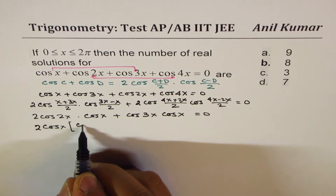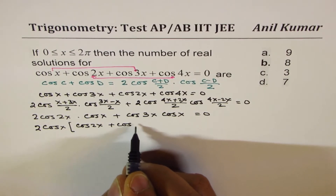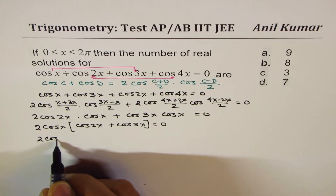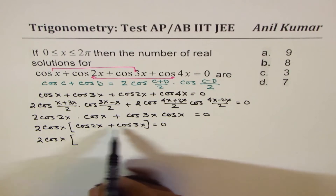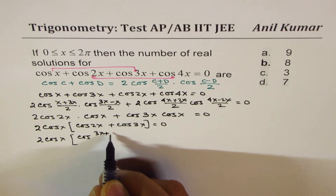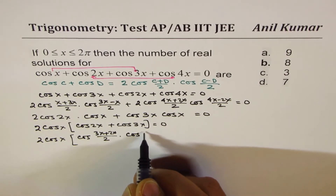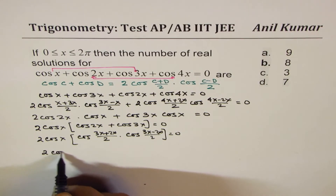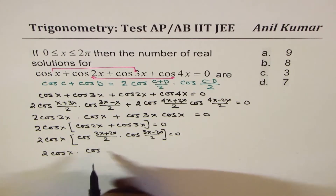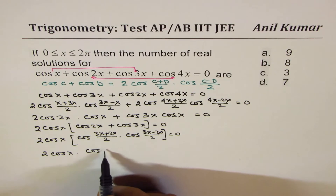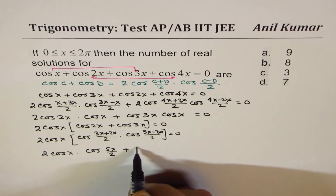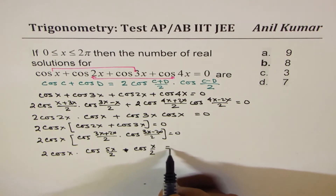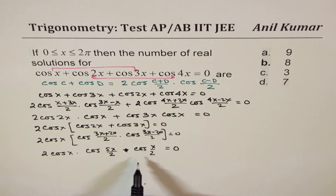We apply the same identity again to cos 2x + cos 3x. Adding and subtracting: cos((3x + 2x)/2)·cos((3x − 2x)/2) = cos(5x/2)·cos(x/2). So the full factored expression becomes 2·cos x · 2·cos(5x/2)·cos(x/2) = 0.